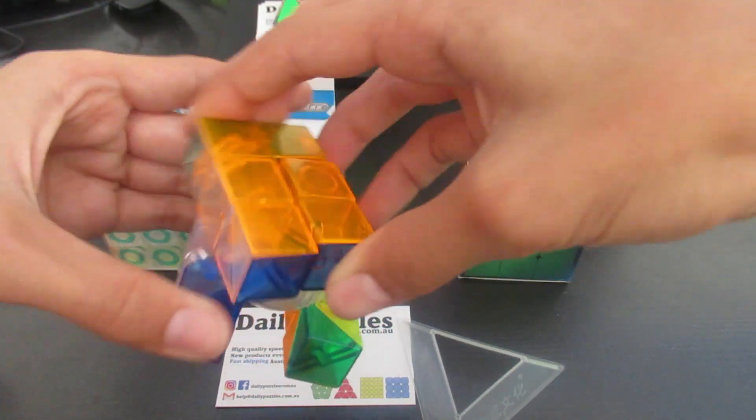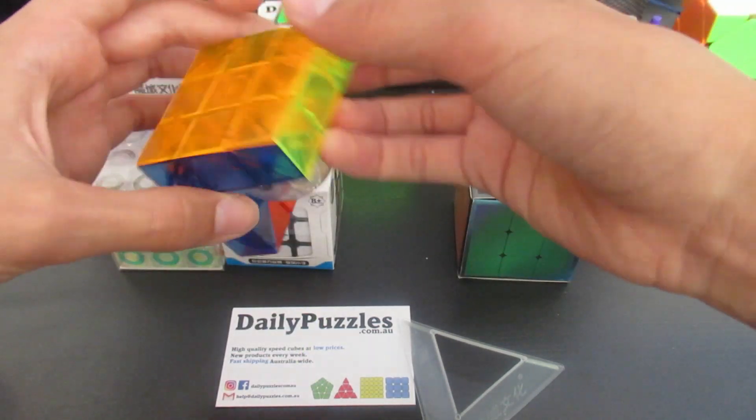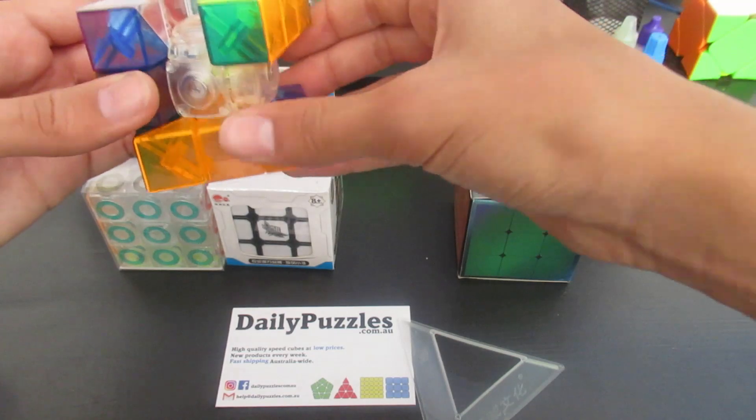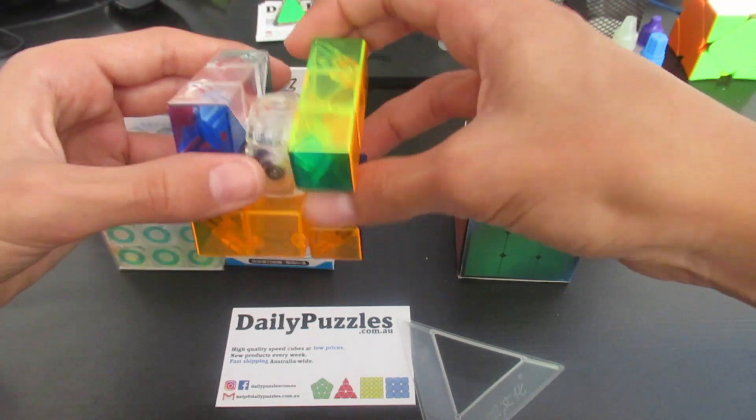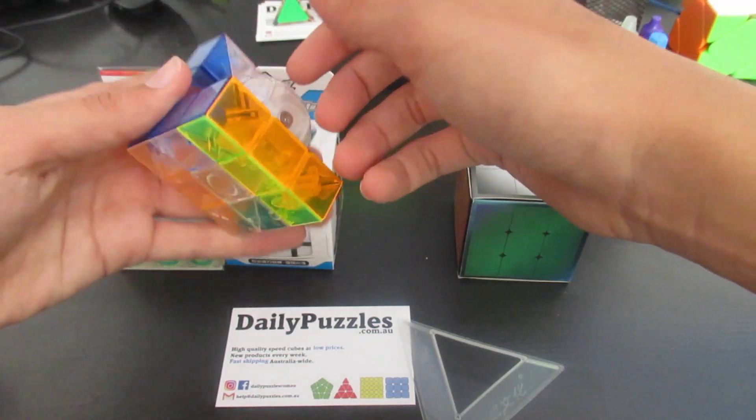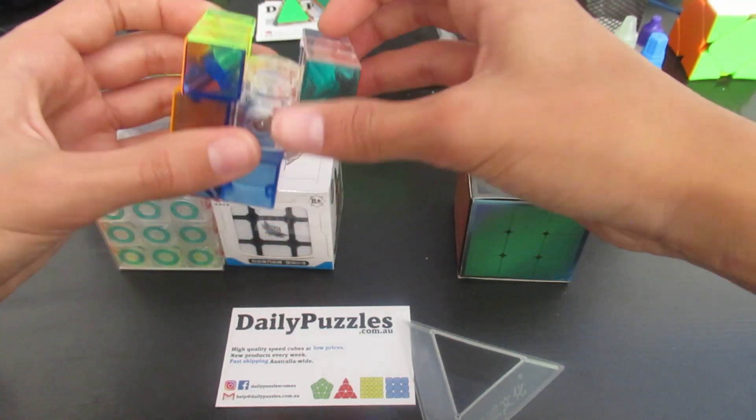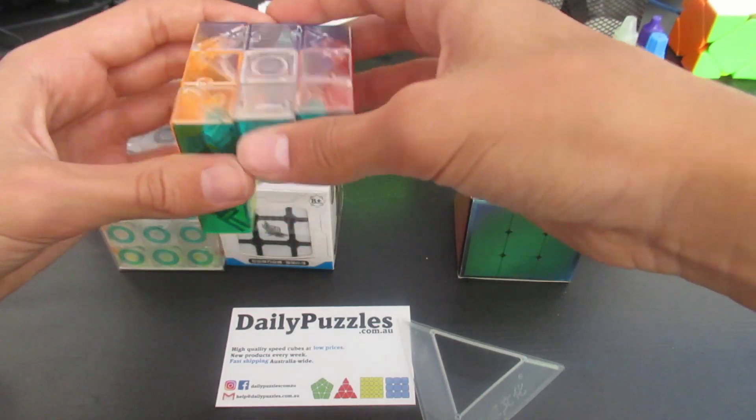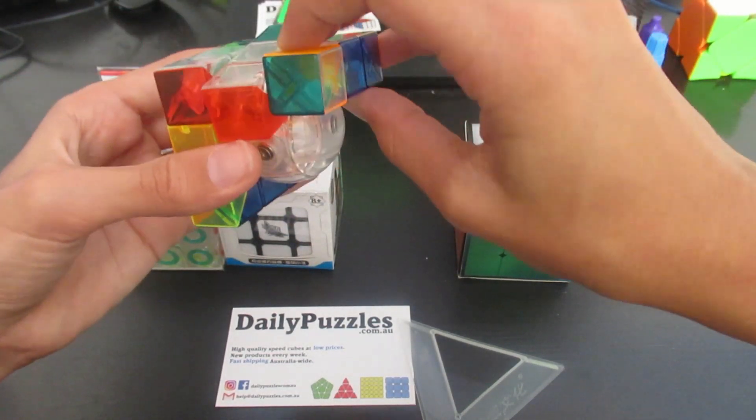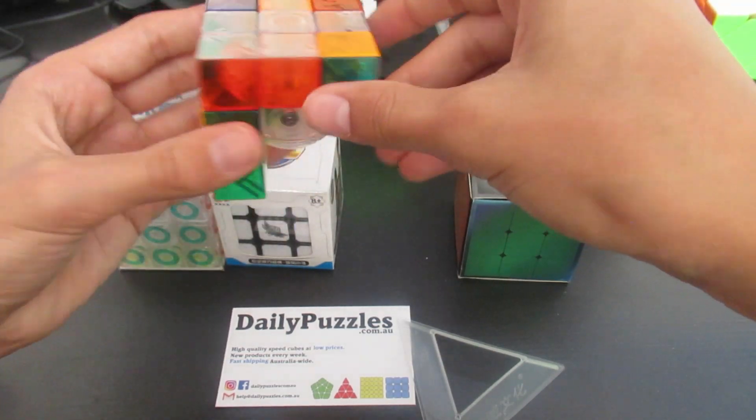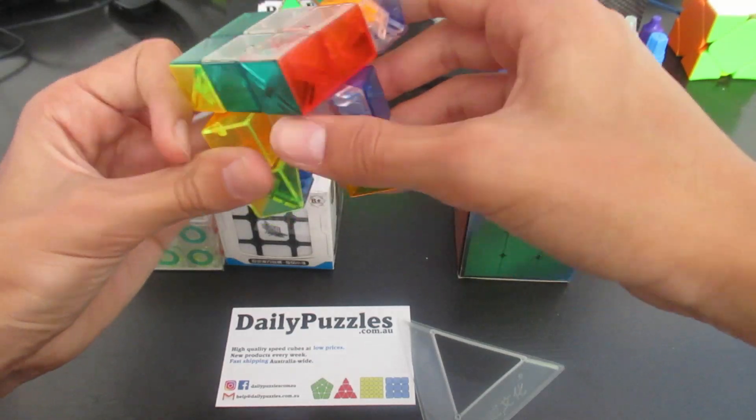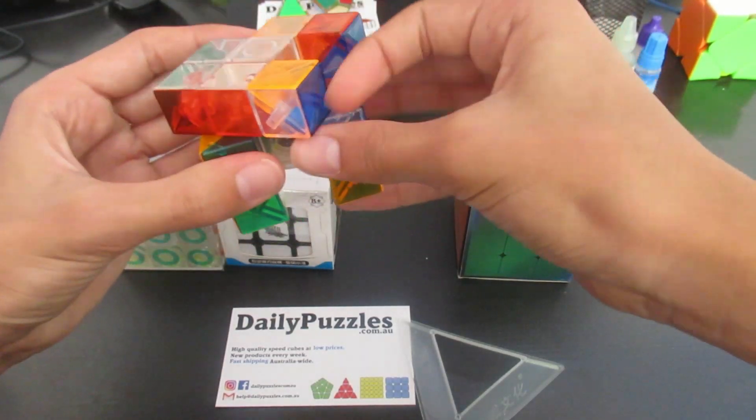It turns pretty fine. The turning's pretty smooth, but you have to align them up pretty well so then they don't catch up or lock up I mean. Very interesting puzzle. Should I give it a solve? I don't know. I could give it a solve but I also don't want to mess it up. Alright, you know what, I'll give it a solve. Scramble it up.